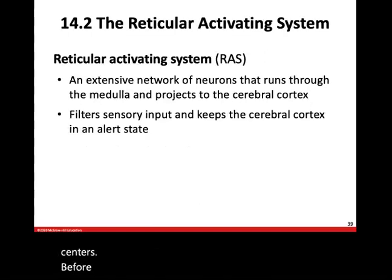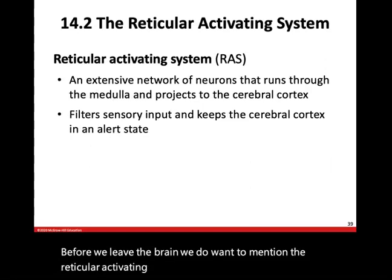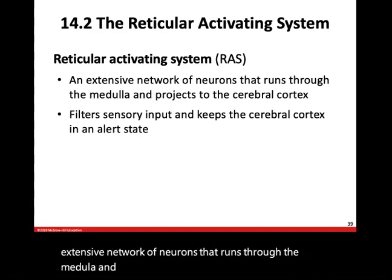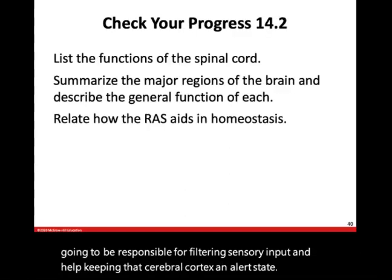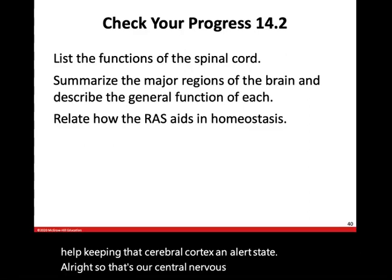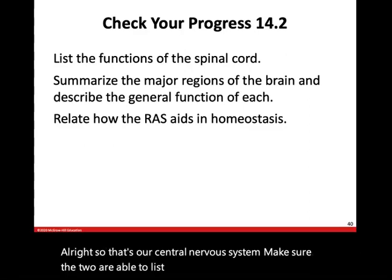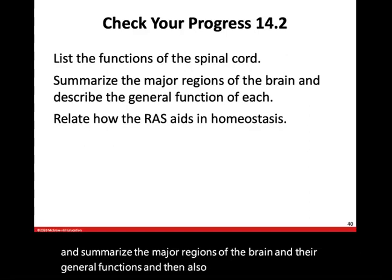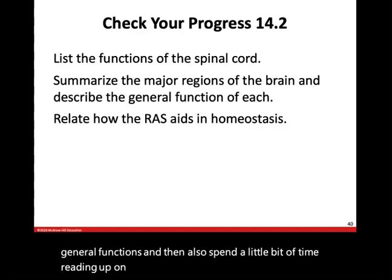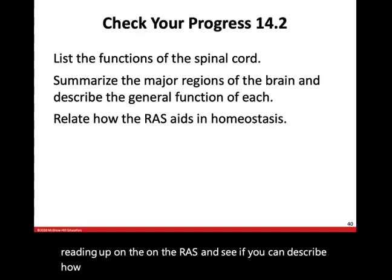The reticular activating system, or RAS, is an extensive network of neurons that runs through the medulla and projects to the cerebral cortex. It is responsible for filtering sensory input and keeping the cerebral cortex in an alert state. Make sure you can list the functions of the spinal cord, summarize the major regions of the brain and their general functions, and describe how the RAS plays a role in maintaining homeostasis.